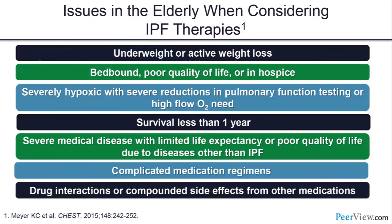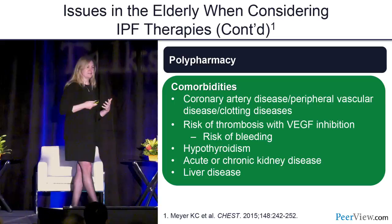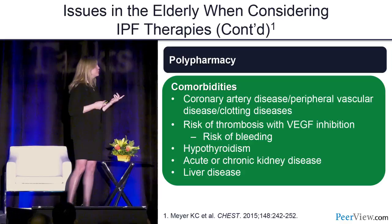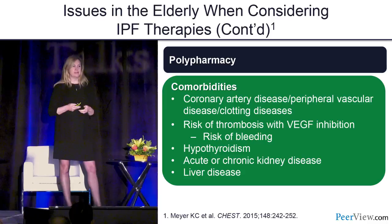Some issues to consider in elderly patients: we may not want to pursue therapies for those with very advanced disease — bed-bound with survival less than a year, severe comorbidities like cancer, or highly complex medication regimens. Polypharmacy is a concern. With nintedanib there is VEGF inhibition and a theoretical risk of bleeding or clotting, so in high-risk patients we may choose an alternative.